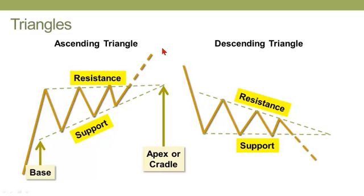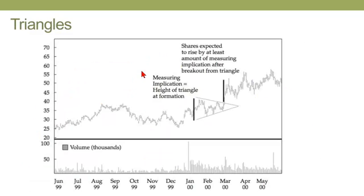So the ascending triangle, descending triangle also have a symmetrical triangle manifestation. And here, in this example, you can see the resistance line and the support line are both non-horizontal and converging here at the apex, where this first distance here, which we previously called the base, can be called the measuring implication.